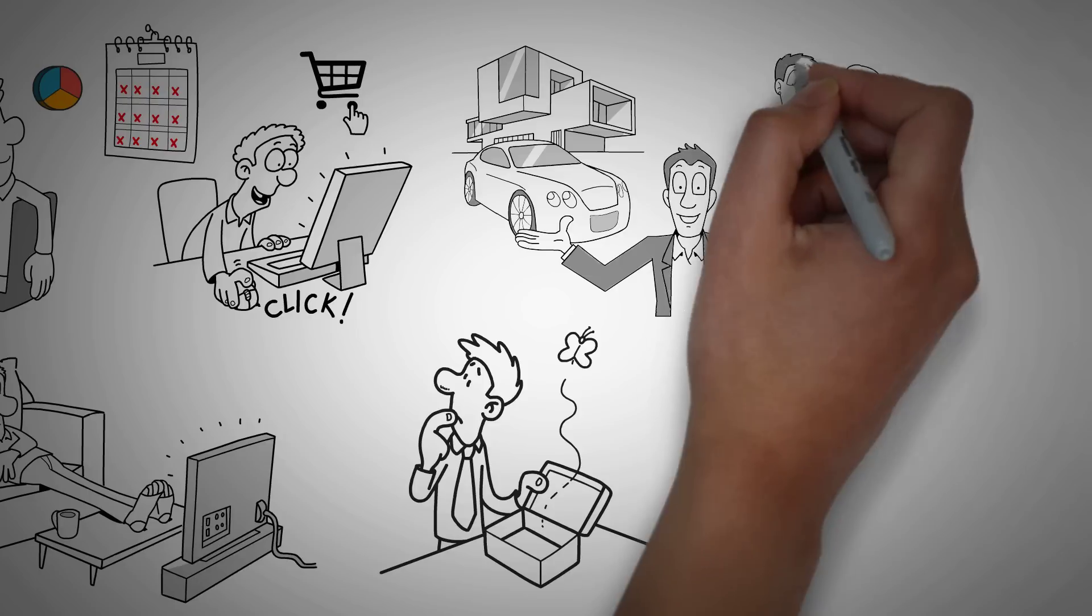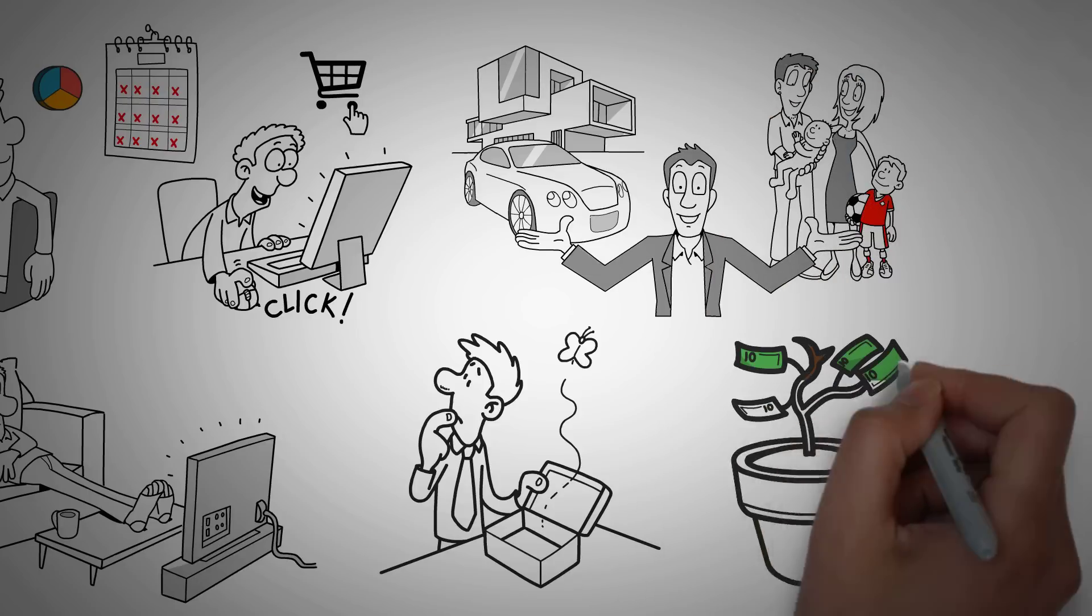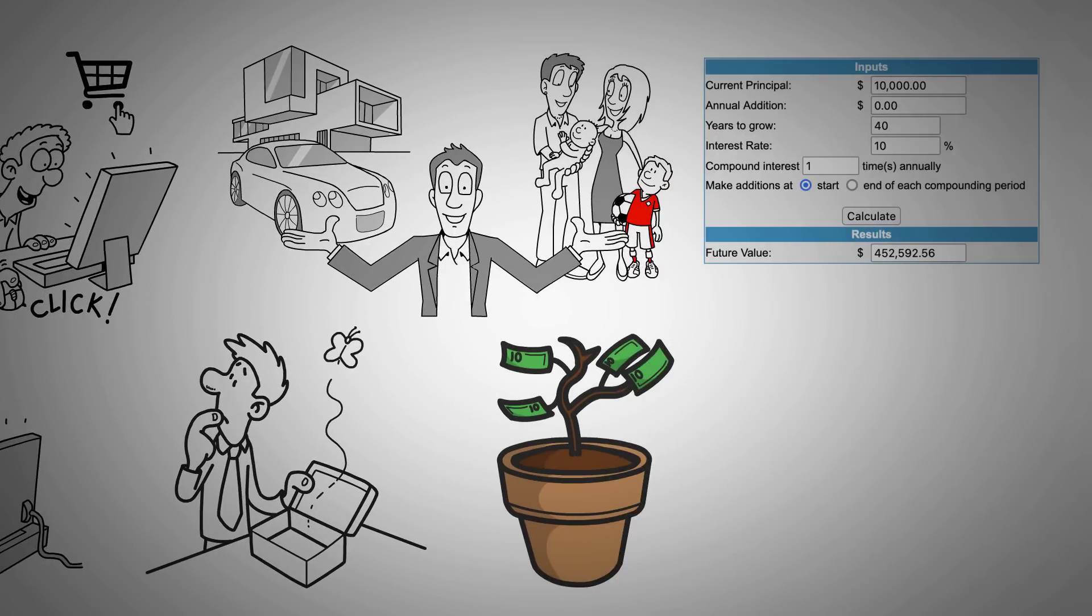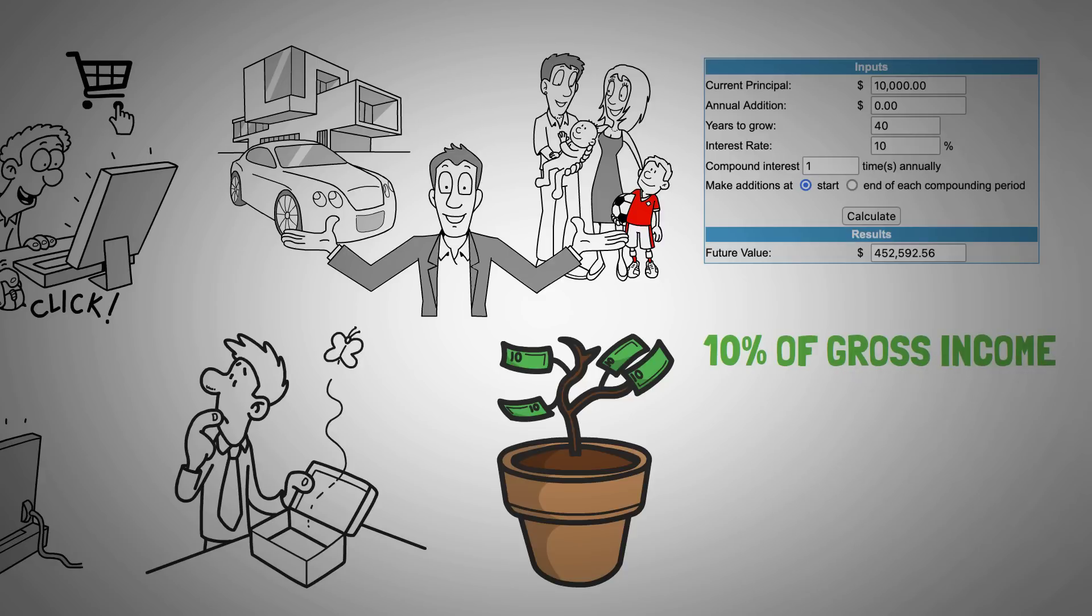But that money saved will grow to incredible amounts over a couple of decades. Just a little bit of money set aside today could mean hundreds of thousands or millions of dollars by the time you reach retirement age. Investing 10% of your income is a great starting point, and you can increase this percentage as you become better at earning and saving money.